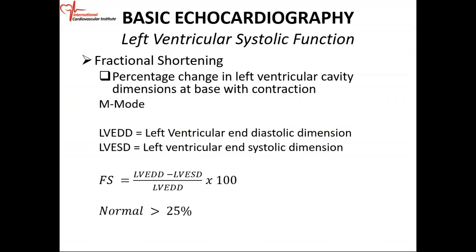Fractional shortening is a linear measurement, not volumetric like ejection fraction. It is the percentage change in left ventricular cavity dimensions at the base with contraction. In diastole, the LV cavity has a certain dimension; in systole, a smaller dimension. This measurement is done at the base using two methods: M-mode or two-dimensional echo.